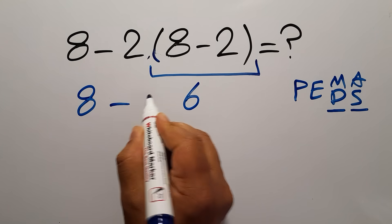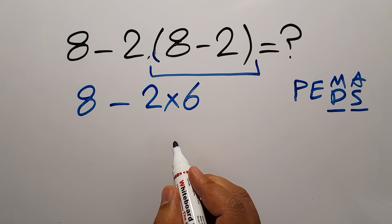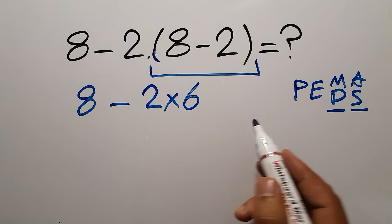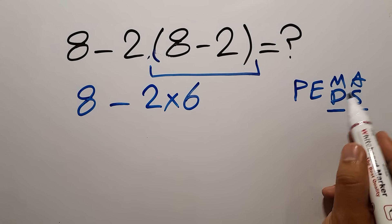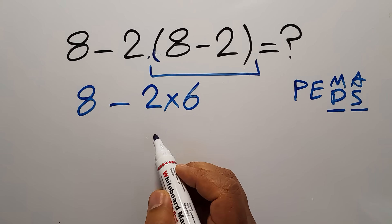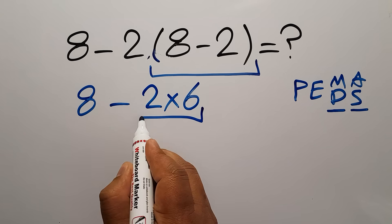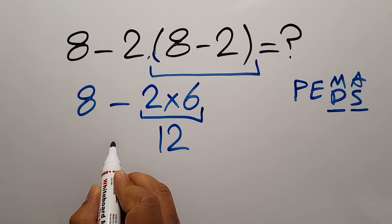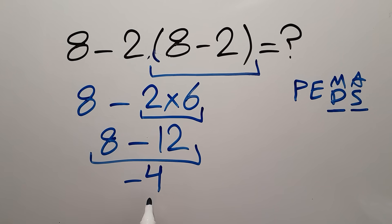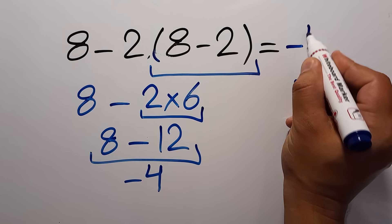So we have 8 minus 2 times 6. We have 1 subtraction and 1 multiplication. In PEMDAS, multiplication comes before subtraction. So in this step, we have to do this multiplication. 2 times 6 gives us 12. So we have 8 minus 12, which equals negative 4. That means our final answer to this problem is negative 4. The correct answer is negative 4.